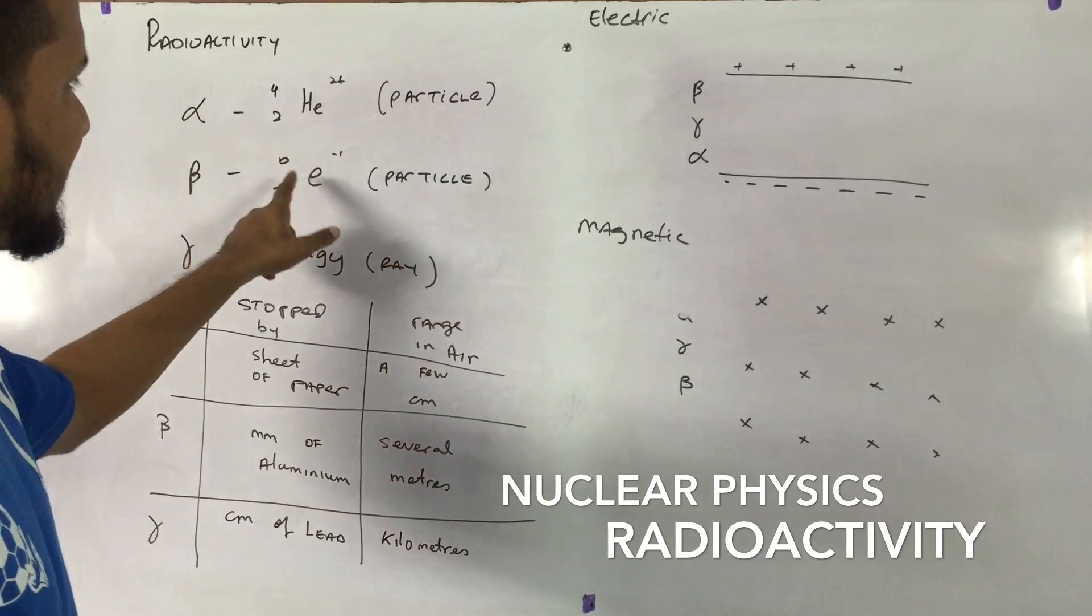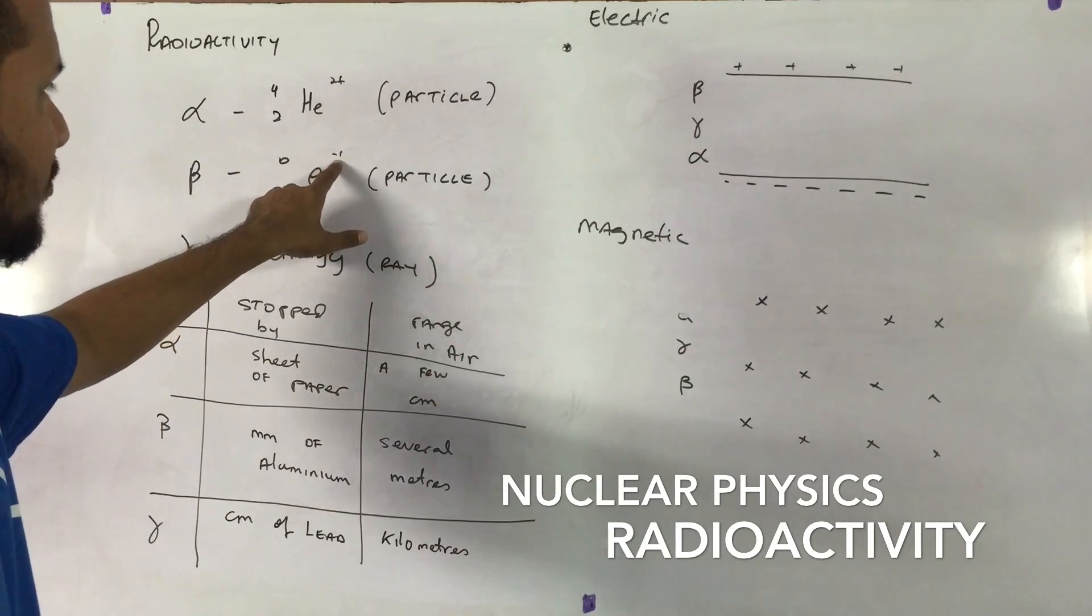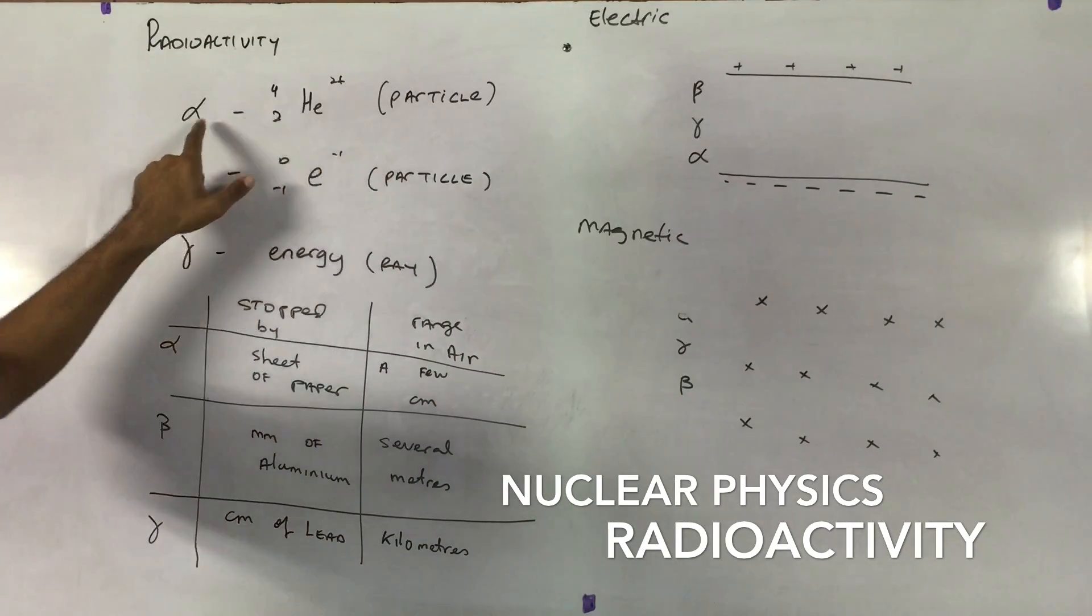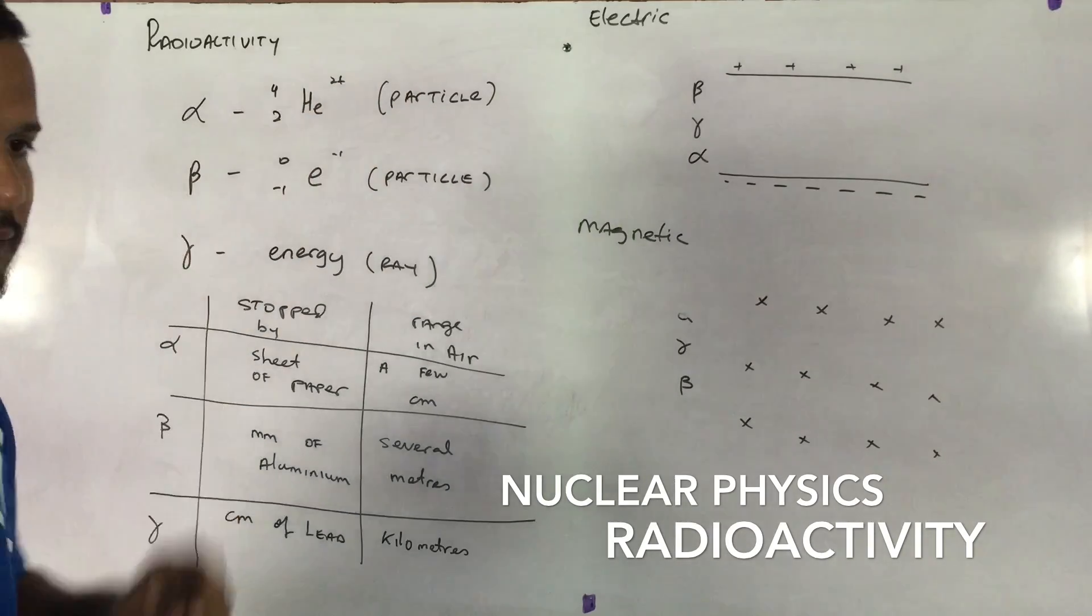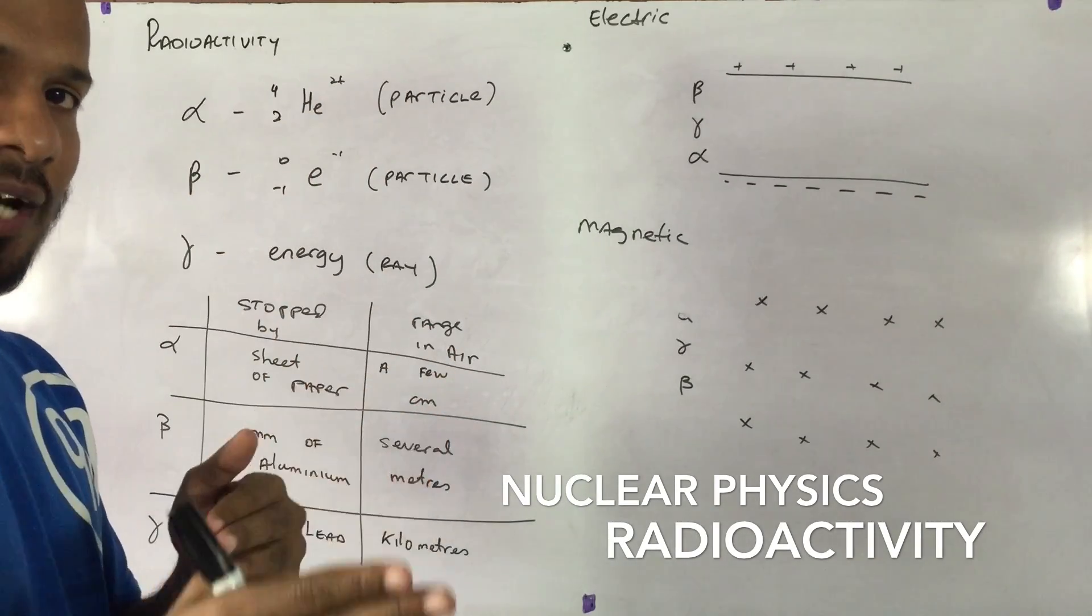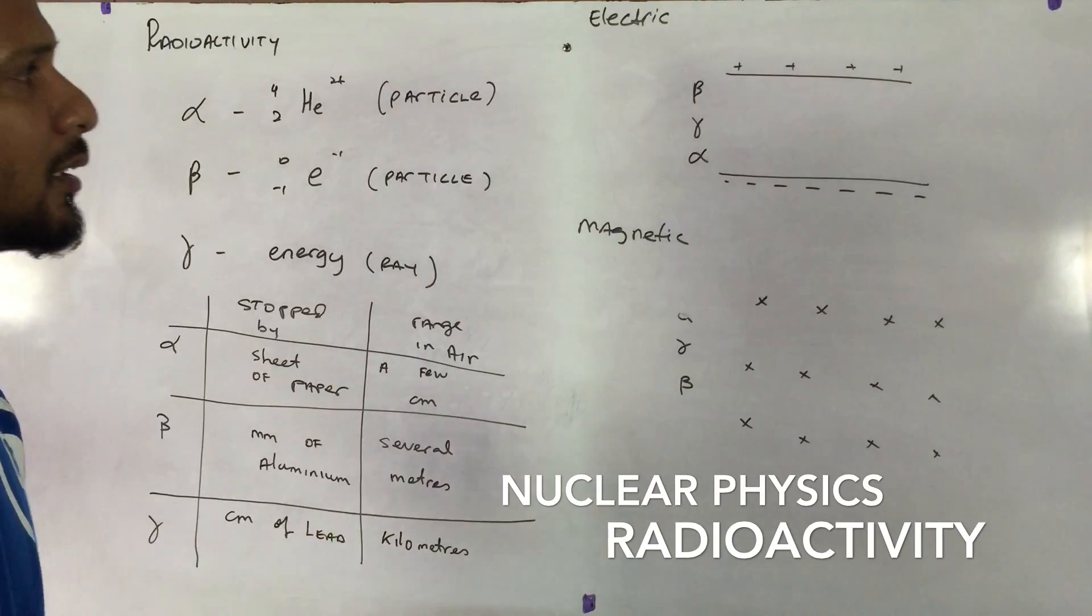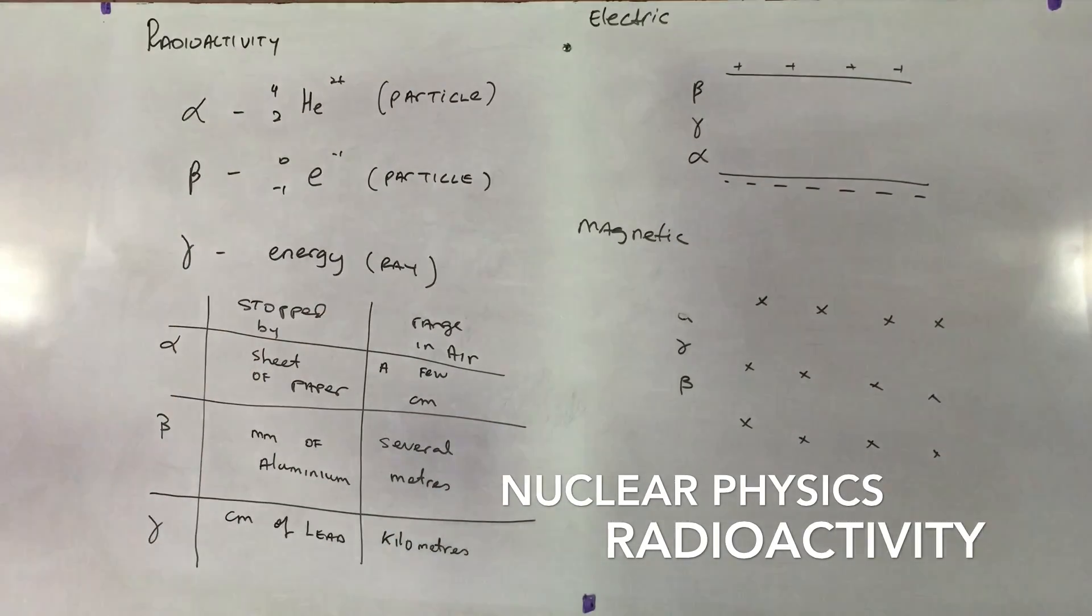Well, a beta particle is a negatively charged particle. Alpha particle is a positively charged particle. So think about it. When we have like charge as a track, unlike charge as a bell.